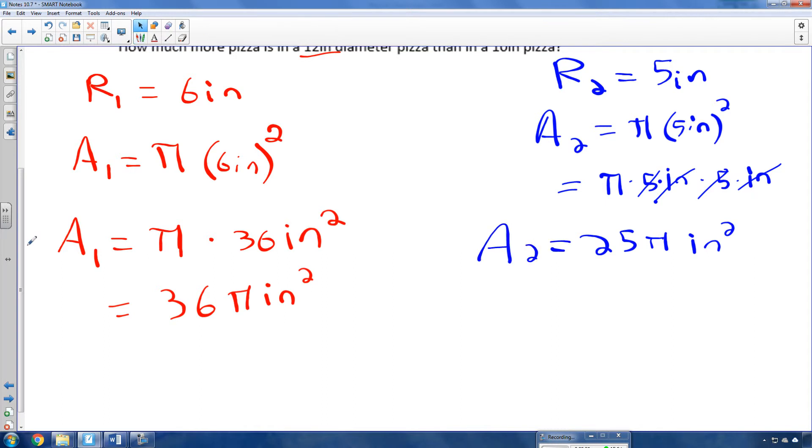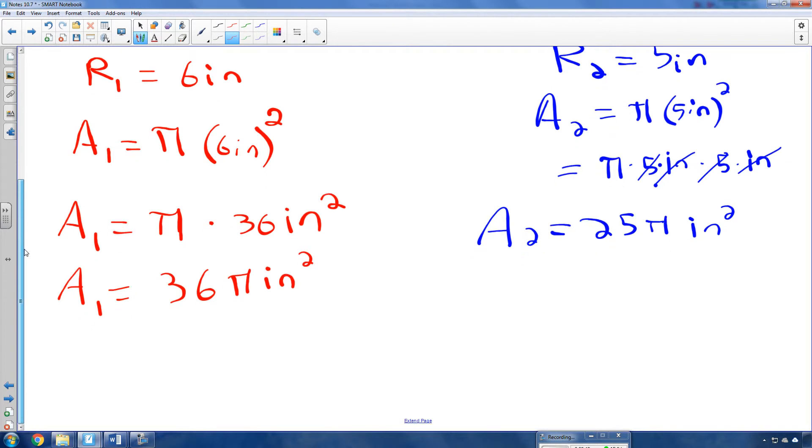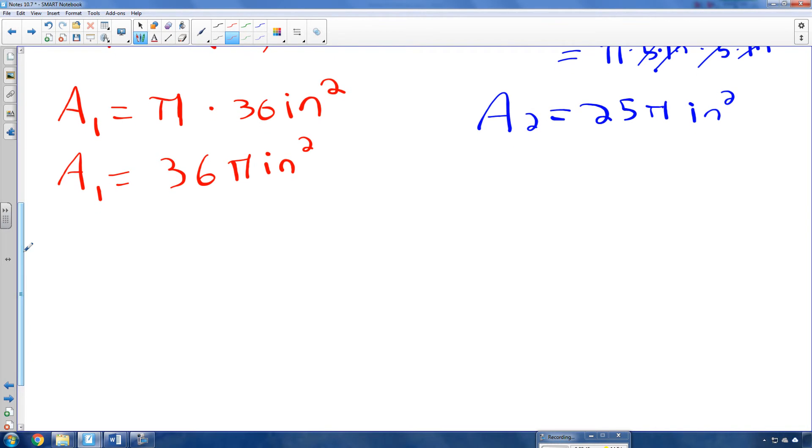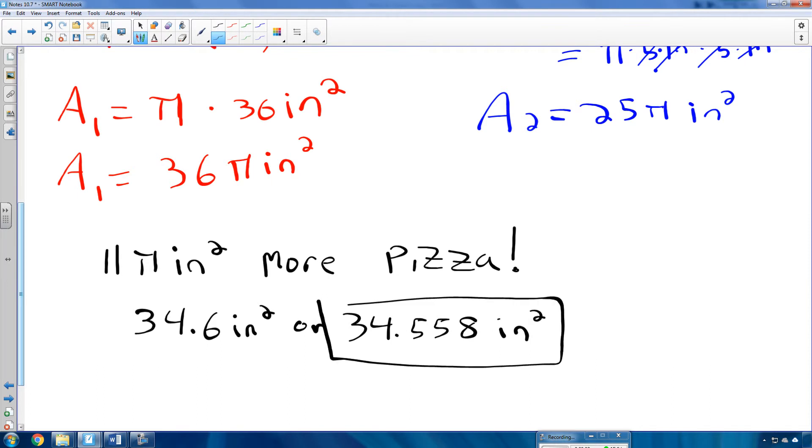So we can find out how much more pizza we got with the first pizza if we just subtract them. So 36 minus 25, with a pi attached, of course, is 11 pi inches squared more pizza. But that doesn't make a lot of sense to us. So we would take that and multiply it by 3.1415926. And that would come out to 34.558 or 34.6 inches squared. But if you plan on moving into higher math, you've got to keep a few more decimal places.